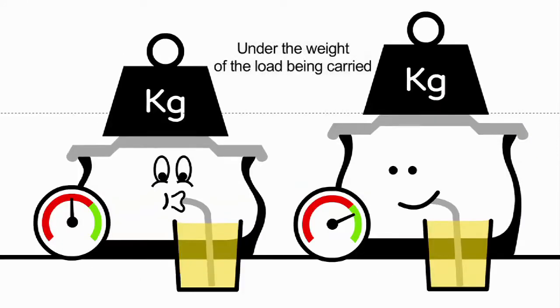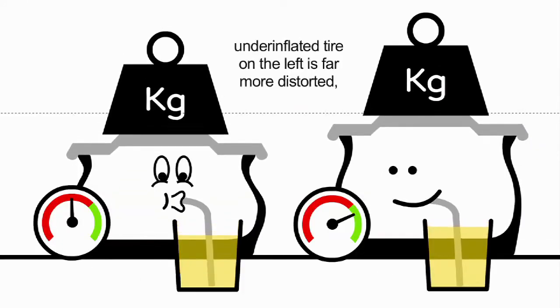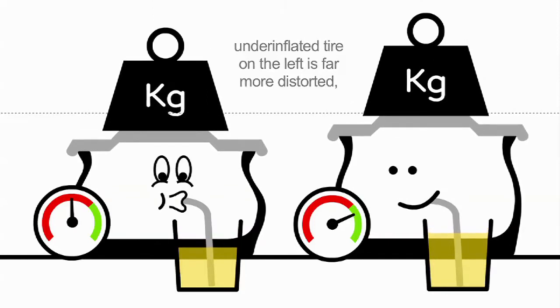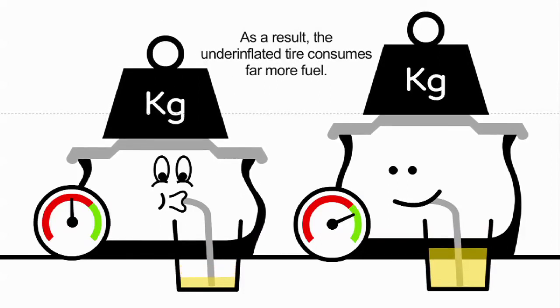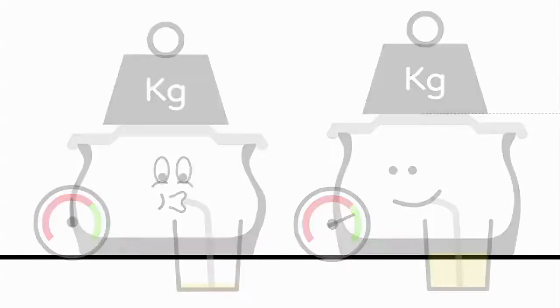Under the weight of the load being carried, the under-inflated tire on the left is far more distorted compared to the correctly inflated one on the right. As a result, the under-inflated tire consumes more fuel.